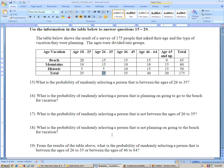18, what is the probability of randomly selecting a person that is not going to the beach? Well, the probability that they're going to the beach is 65 out of 175, so not going to the beach would be 1 minus that, or 110 out of 175.